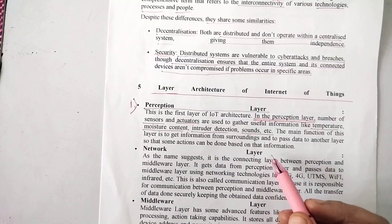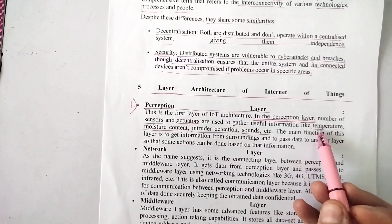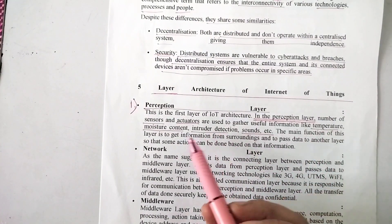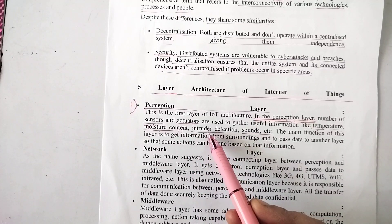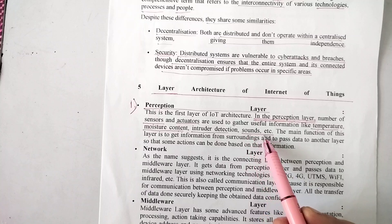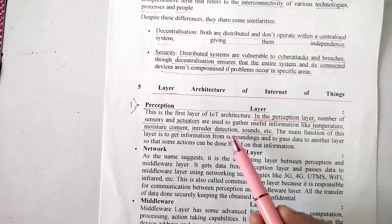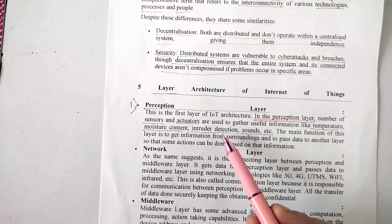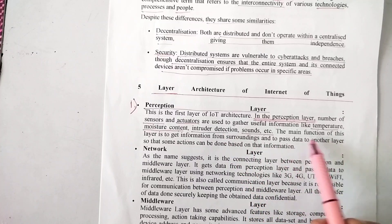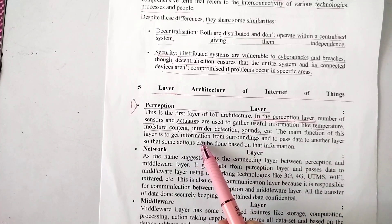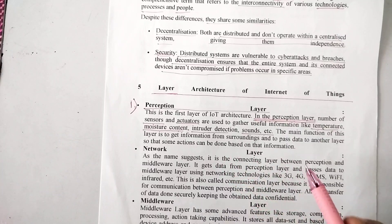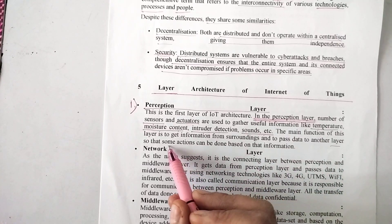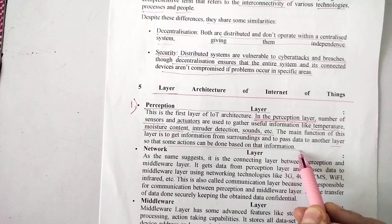Together they gather useful information like temperature, moisture content, intruder detection, and various kinds of sounds. These things are detected by the sensors and actuators, which then process them. The main function of this layer is to get information from surroundings and pass data to another layer so that actions can be done based on that information.